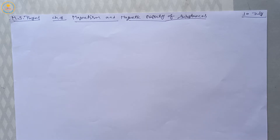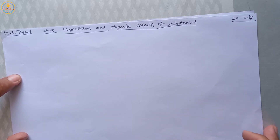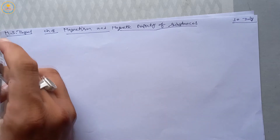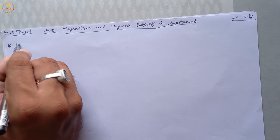Good morning to all my dearest students. Chapter number eight is going on, which is magnetism and magnetic properties of substances. In this chapter we discussed about properties of a bar magnet, some definitions, and some properties of magnetic field lines. In this sequence, today we discuss a new property of magnetic field lines.